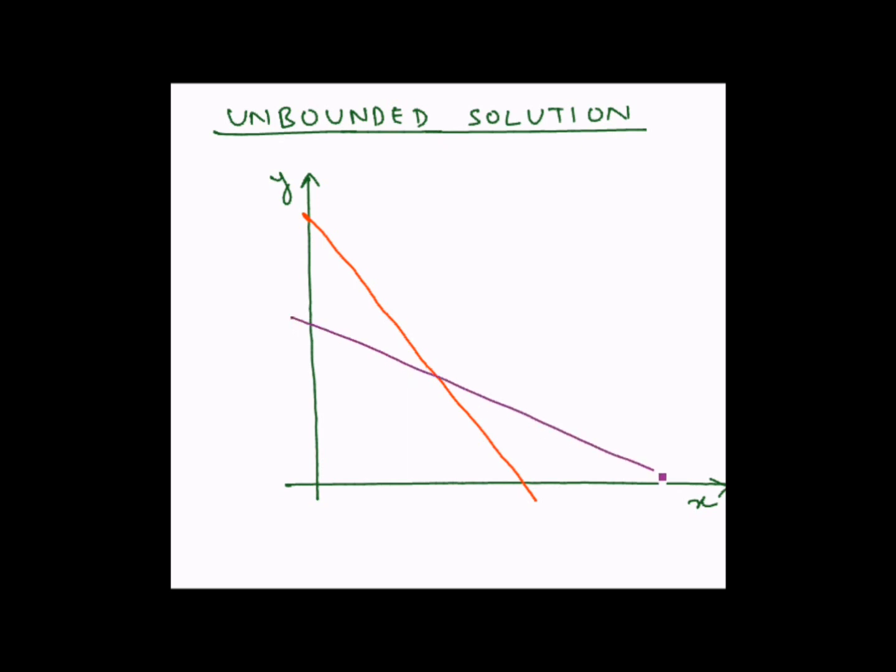And this is the second constraint. The constraints have been given to us with a greater than or equal to sign, so this means that the feasible solution region for both these constraints would be the region on the line and above the line common to both these lines.